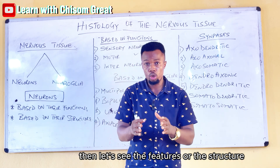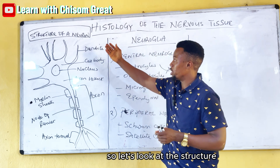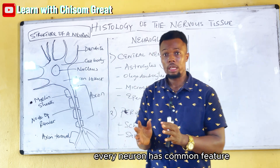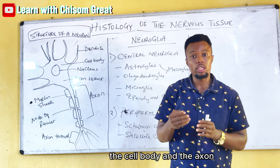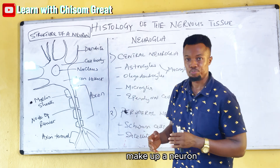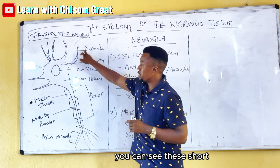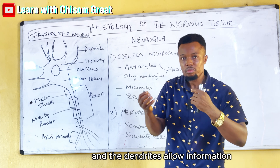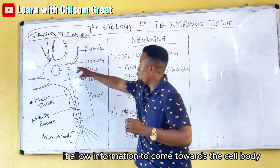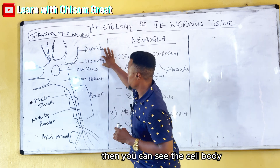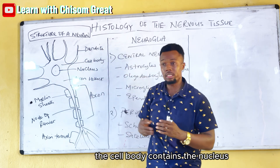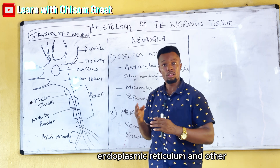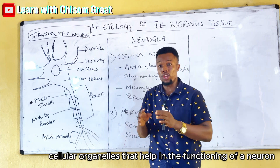Let's look at the features found in the neuron. Every neuron has the dendrites, the cell body, and the axon. The dendrites are short branching processes that allow information to come towards the cell body. The cell body contains the nucleus, the mitochondria, the Golgi apparatus, endoplasmic reticulum, and other cellular organelles that help in the functioning of a neuron.